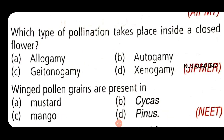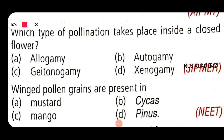Next example: winged pollen grains are present in Pinus. Each pollen grain has two wing-like structures which enable it to float in air as an adaptation for dispersal by wind.